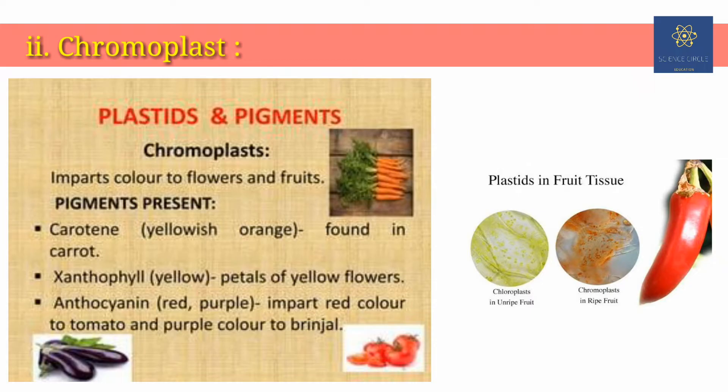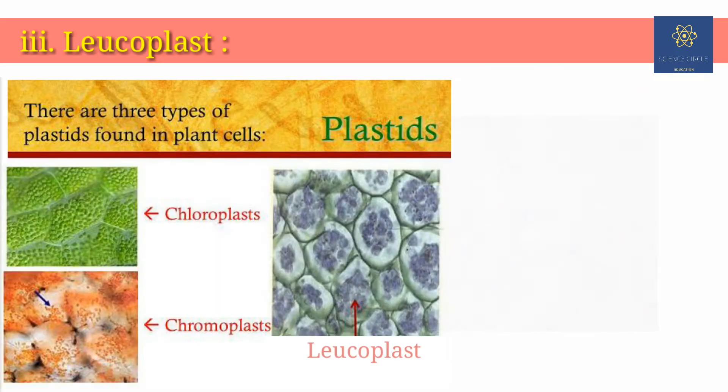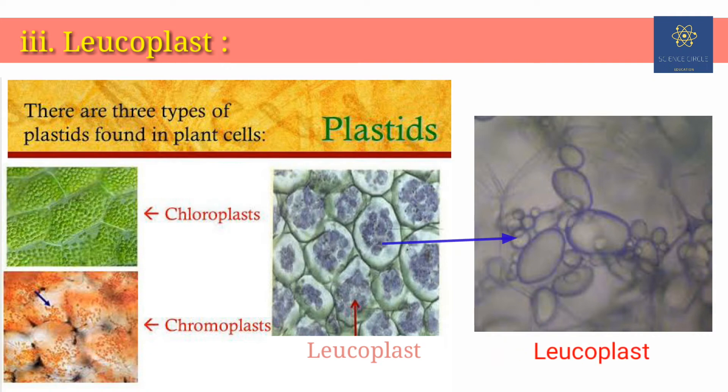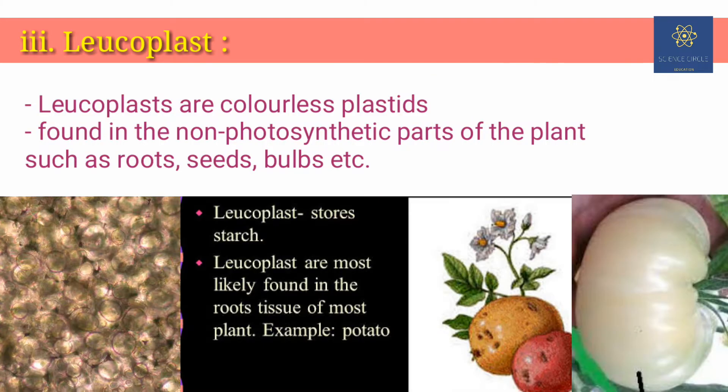Xanthophyll gives the part of a plant a yellow, orange, or red color. The third type is leucoplast. They are non-pigmented organelles which are colorless. Leucoplast is usually found in the non-photosynthetic parts of the plants like roots. They act as a storage site for starch, lipids, and protein depending on the needs of the plant.